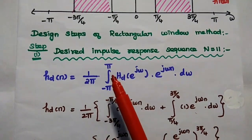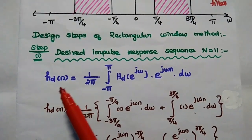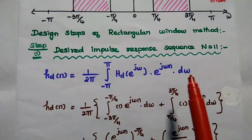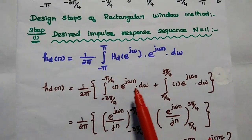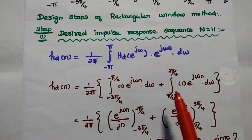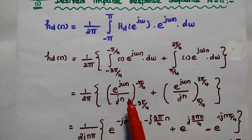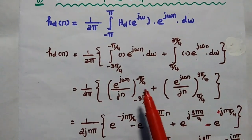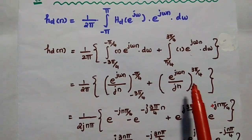The first step is to find the desired impulse response sequence for the given filter. It can be obtained using the formula: hd(n) = (1/2π) × integration from −π to π of Hd(e^jω) × e^(jωn) dω. We substitute the value of Hd(e^jω), which is 1 when the limit is from −3π/4 to −π/4 and π/4 to 3π/4. We change the limits and integrate with respect to ω. This term becomes e^(jωn)/jn, with limits from −3π/4 to −π/4, and similarly from π/4 to 3π/4.